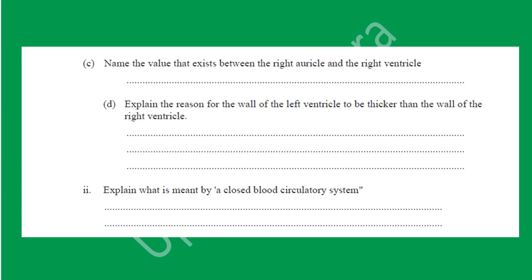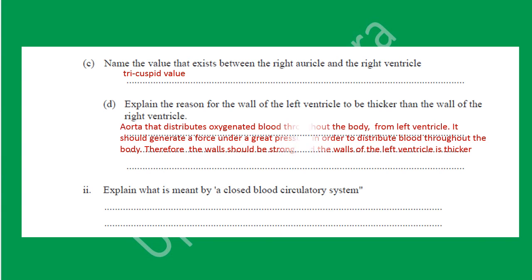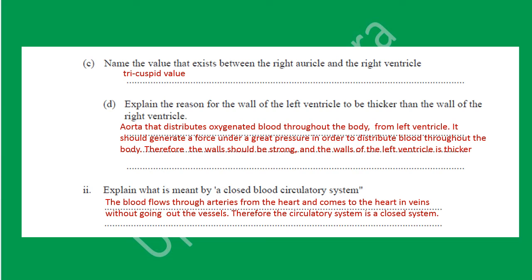Name the valve that exists between the right auricle and the right ventricle — that is the tricuspid valve. Explain the reason for the wall of the left ventricle to be thicker than the wall of the right ventricle: the aorta distributes oxygenated blood throughout the body from the left ventricle, so it must generate force under great pressure; therefore the wall should be strong and the walls of the left ventricle are thicker. A closed blood circulatory system means blood flows through arteries from the heart and returns to the heart through veins without leaving the vessels; therefore the circulatory system is a closed system.